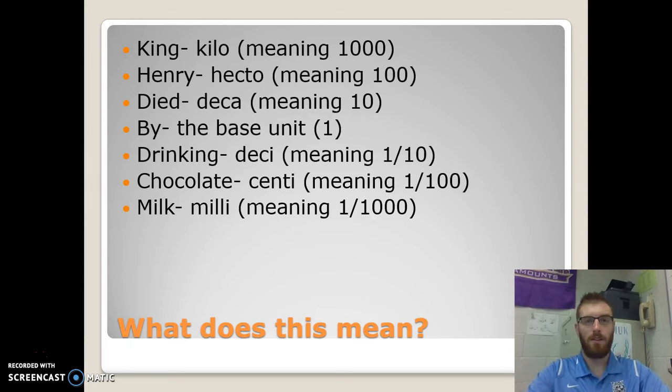King stands for kilo, meaning 1,000. Henry for hecto, meaning 100. Died for deca, meaning 10.